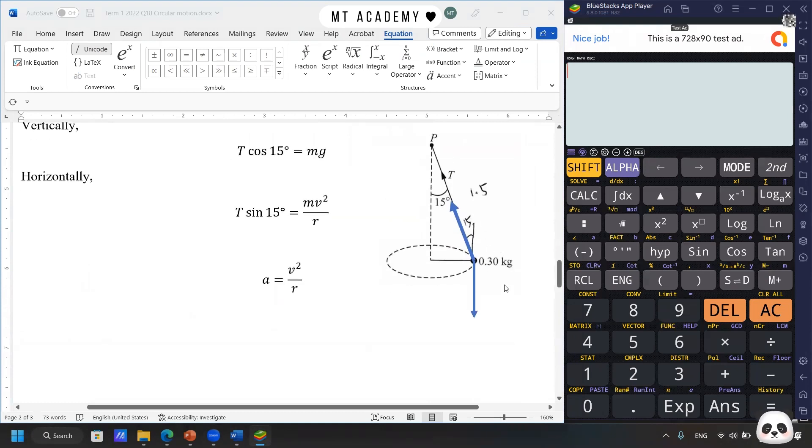First, we need to look at the diagram. We have the tension along the string, we have the mass, and the weight is always a downward force. And also another thing that we cannot ignore is about the centripetal force because it moves in a circular motion, and the direction is always toward the center.